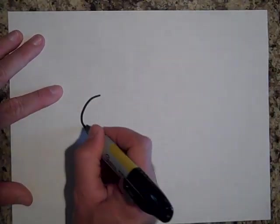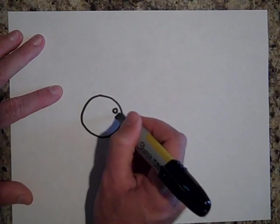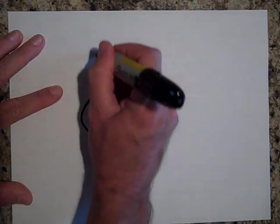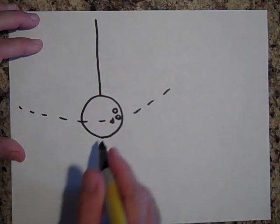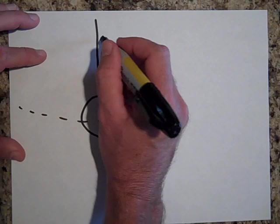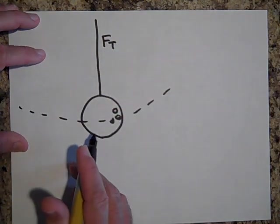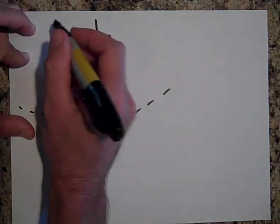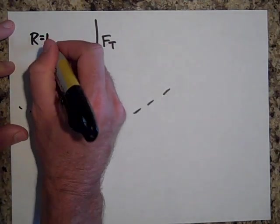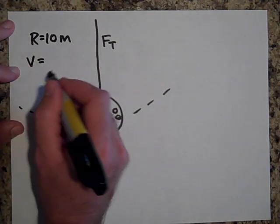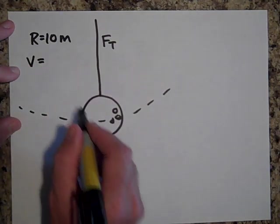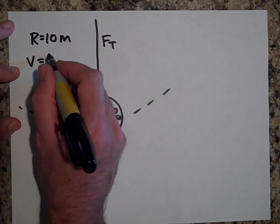One more. What if instead this bowling ball is coming through, it's a pendulum and it's coming through an arc, so it's going in a circle and it comes through like that. And I want to know what the tension is in this wire. And I'm told that r is 10 meters and I know the speed right at the bottom, right there, is four meters per second.